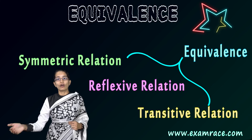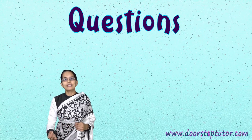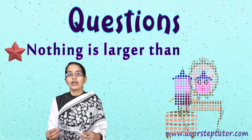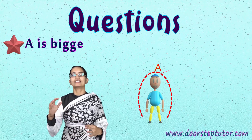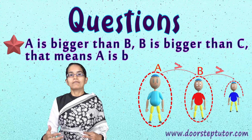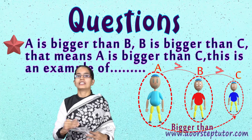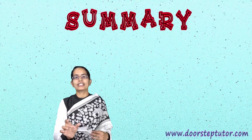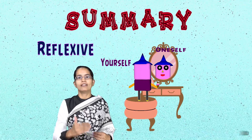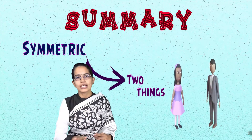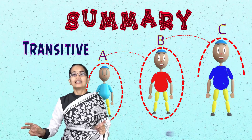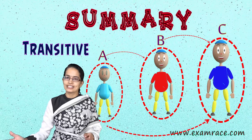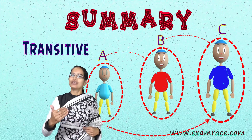Those are very simple logic relations, and you often get questions on them. For example: nothing is larger than itself — that is an irreflexive relation. If a is bigger than b, and b is bigger than c, then a is bigger than c — that is transitive. Quick summary: reflexive is like a reflection in a mirror — it's about oneself. Symmetric involves two things. Transitive involves three things — you know the relation between first and second, second and third, and derive the relation between first and third. When all three hold, you have equivalence.